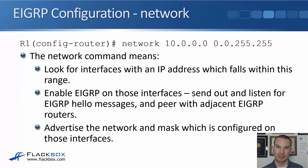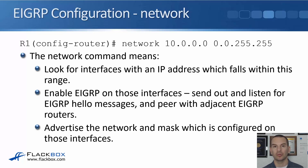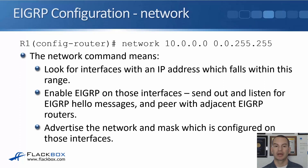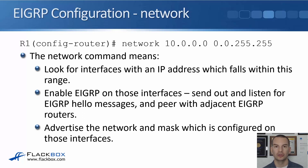This is important because the network command can be confusing. If you say 'network 10.0.0.0' with wildcard mask 0.0.255.255, it means: look for interfaces with an IP address that falls within that range — in this example, any interface that begins with 10.0. When there's a match, enable EIGRP on those interfaces, meaning send out and listen for EIGRP hello messages and peer with any adjacent EIGRP routers on the same link. Then once the EIGRP peer is set up, advertise the network and mask configured on those interfaces.